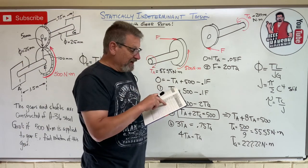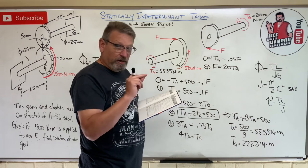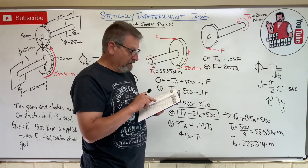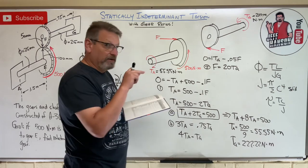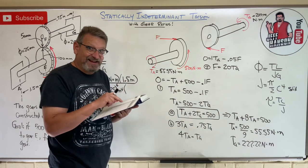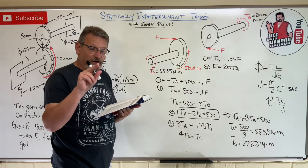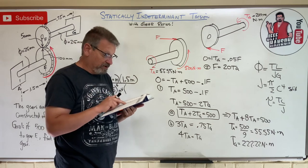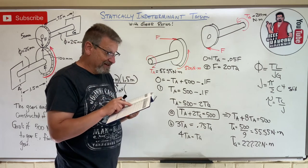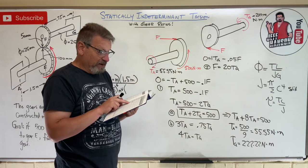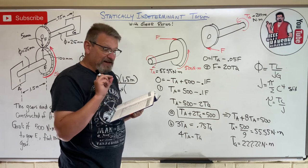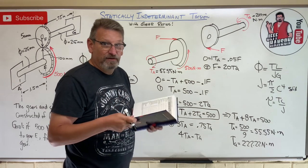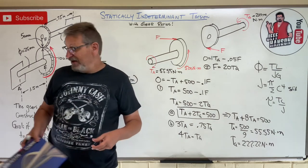We can look up G in the back of our book. For A36 steel, we need to be on the SI table, not the US customary table. A36 steel: G = 75 GPa.